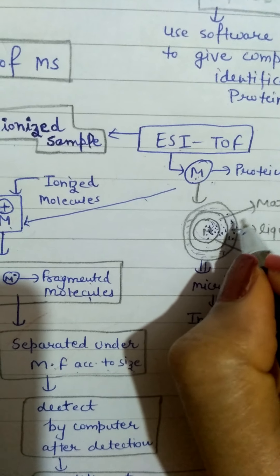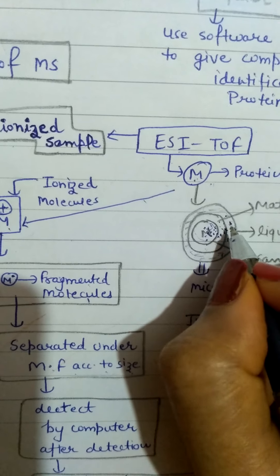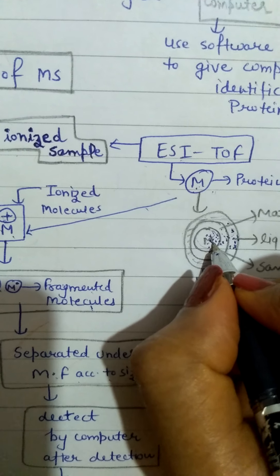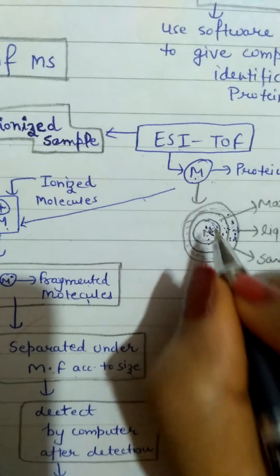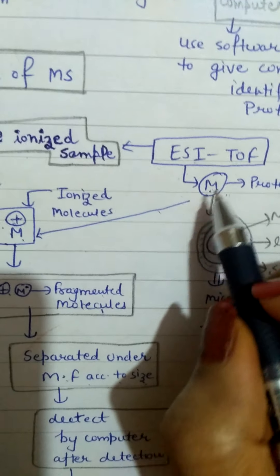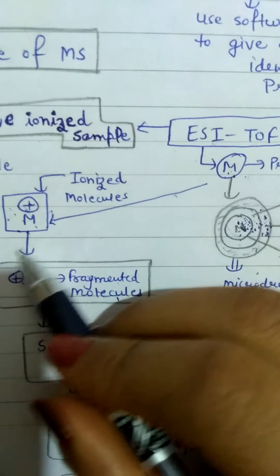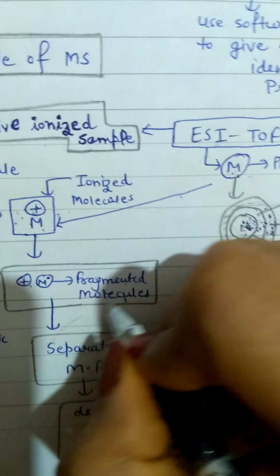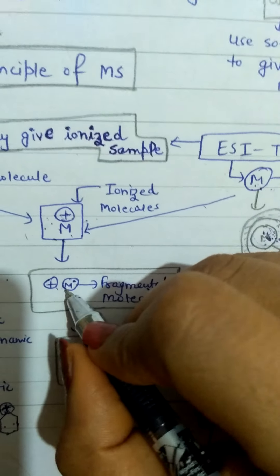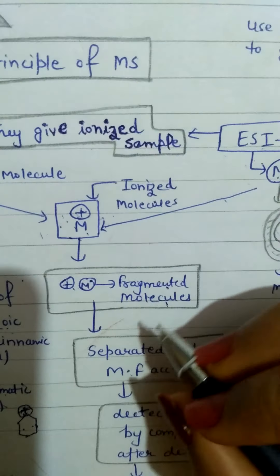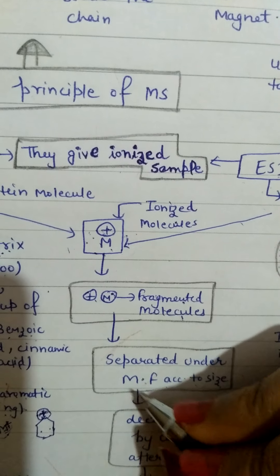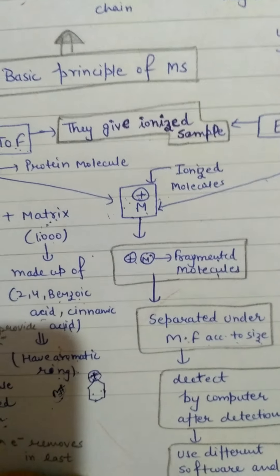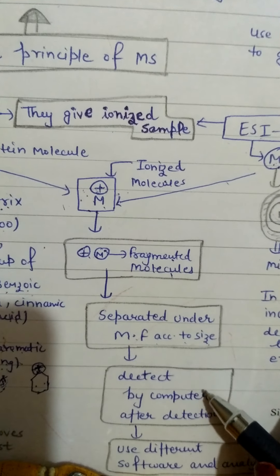The electron is sprayed in the liquid solvent, where there were many electrons. A lot of heat was generated from the pressure. It started hitting the electron from M-positive, which is our ionized molecule. Our ionized molecule now gets converted into a fragmented molecule — that is M free-radical plus charge. Now it goes under a magnetic field where it gets separated according to size. In the last step, we detect our sample with the help of a computer or different software.